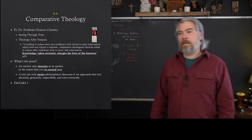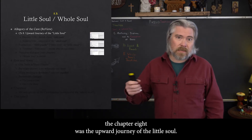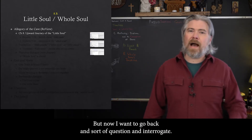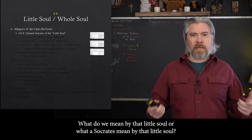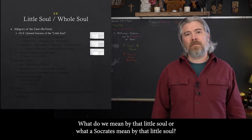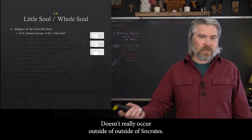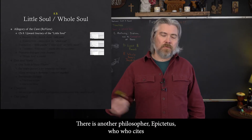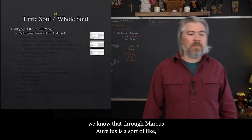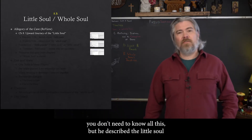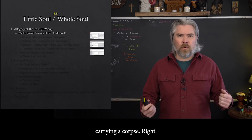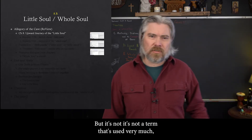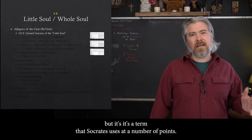Section two. In chapter 8, 'The Upward Journey of the Little Soul,' we talked a lot about that upward journey. But now I want to go back and interrogate — what do we mean by that little soul? What does Socrates mean by that? This is a very unusual term. It doesn't really occur outside of Socrates. There's another philosopher, Epictetus, who uses it once — we know that through Marcus Aurelius. He described a human as a little soul carrying a corpse. But it's a term that Socrates uses at a number of points.